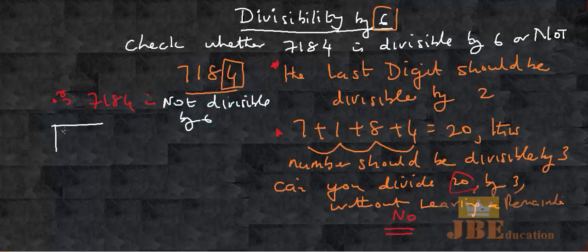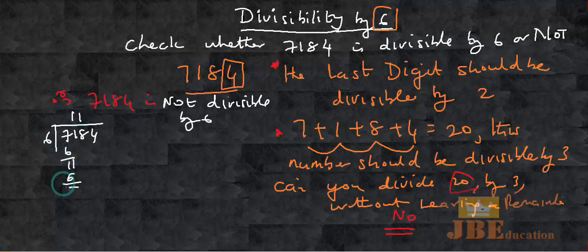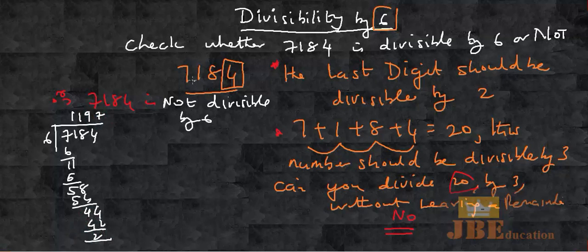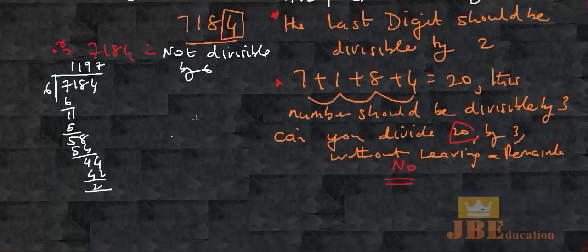I can show this by long division. 6 divides 7184: 6 goes into 7 once, remainder 1; 6 goes into 11 once, remainder 5; 6 times 9 is 54, remainder 4; 6 times 7 is 42, remainder 2. So clearly 7184 is not divisible by 6.